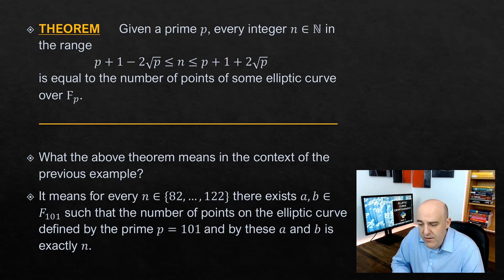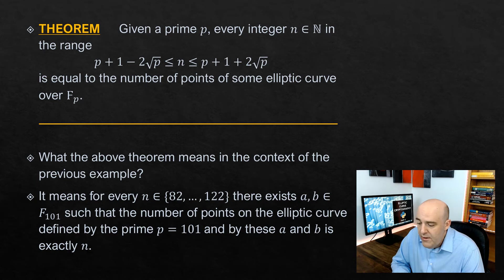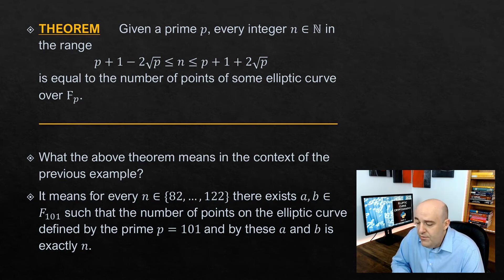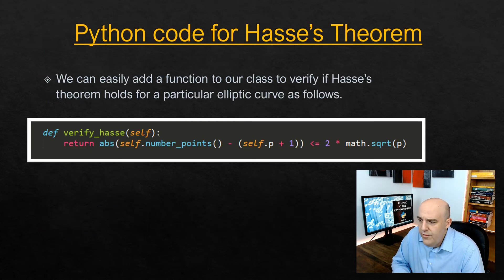In the previous example, our lower bound was 82 and upper bound is 122. If we take any positive integer in that range, including 82 and 122 themselves, then necessarily there exist some A and B in F_101 with non-zero discriminant such that the corresponding elliptic curve has exactly N points including the infinity point.